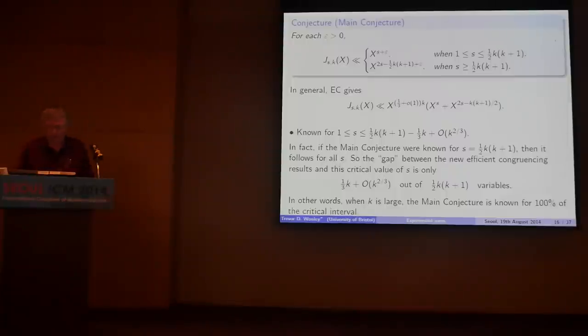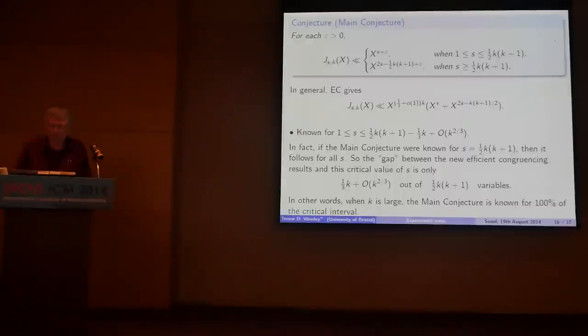If you want an estimate valid for all values of s, a convenient summary is that you miss the conjecture by at worst about x^{k/3}. If you think of s as being of size k², this is a really rather small deviation from the conjectured estimate. Moreover, if you happen to know the main conjecture for the specific value s = k(k+1)/2, it's easy to show the main conjecture holds for all values of s — so we're just k/3 variables away, out of order k² variables.